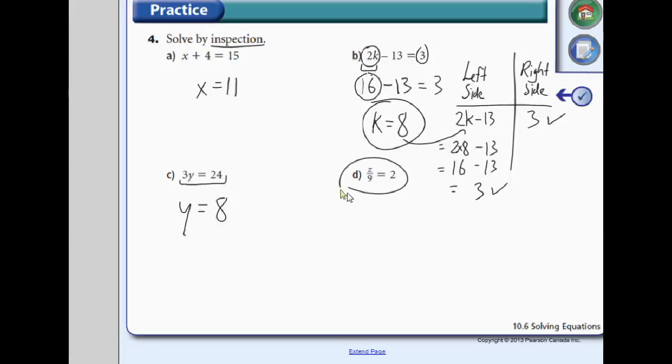Next, d. z over 9. So some number, in this case represented by z, divided by 9 equals 2. So what number divided by 9 will give us 2? Well, 18 divided by 9 will give us 2. So z equals 18. That's solving by inspection, just by looking at the question.